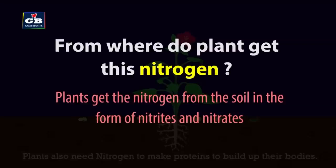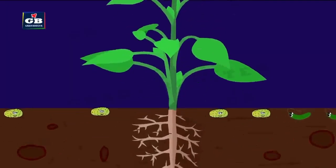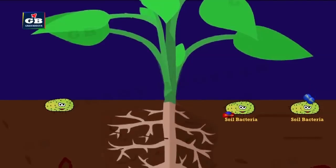Plants get this nitrogen from the soil. Nitrogen is present in the soil in the form of nitrites and nitrates. The nitrogen-fixing bacteria present in the soil converts the atmospheric nitrogen into nitrites and nitrates. This is all about the nutrition in plants.